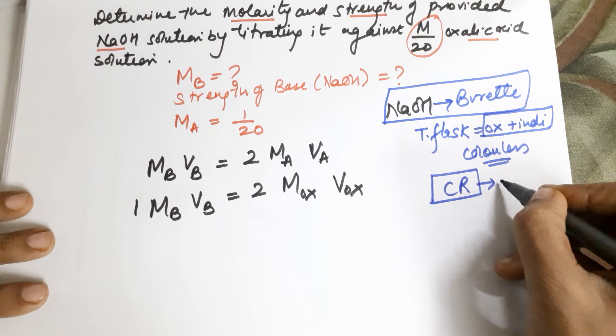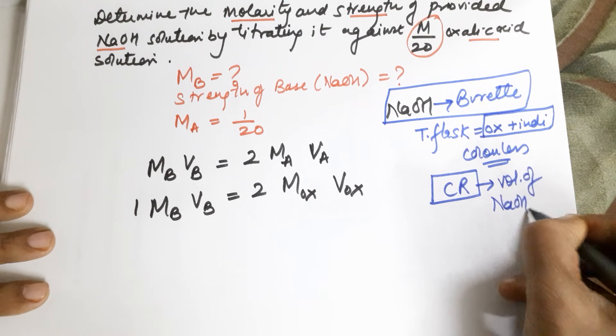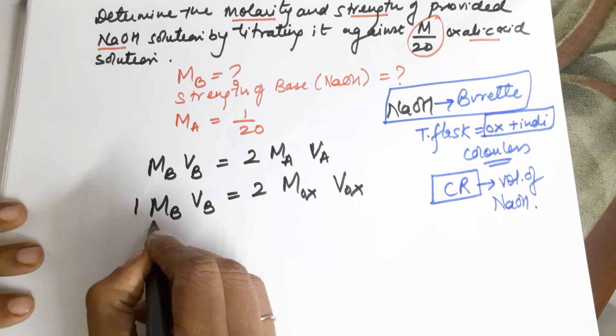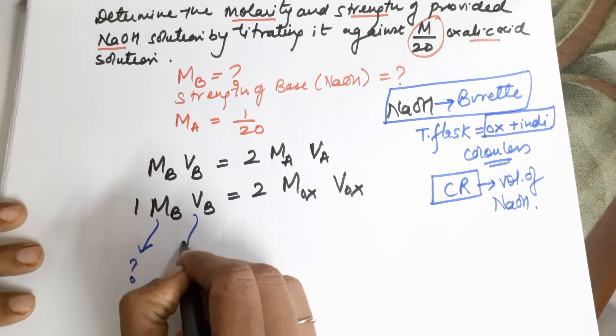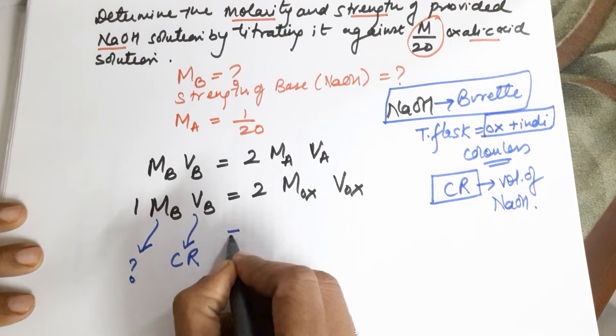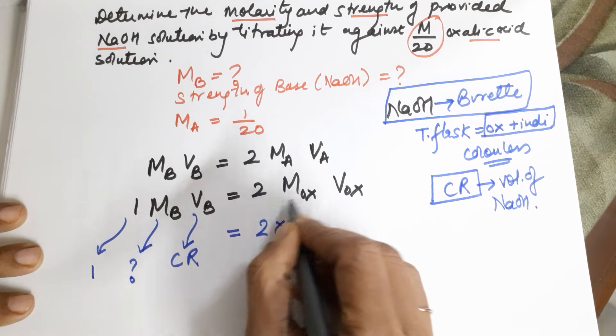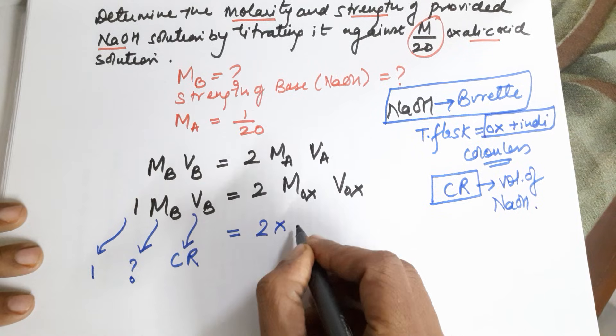Starting it off, let us assume after the titration you do get the concordant reading, and this concordant reading which you get after 3 titrations would give you the volume of the base, that is NaOH. Substituting this, the volume of the base will be your concordant reading. 2 into molarity of oxalic acid is how much? 1 by 20.